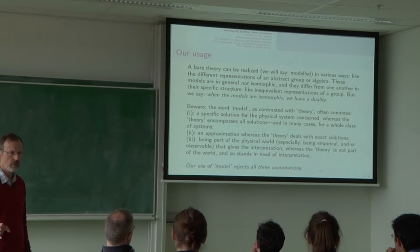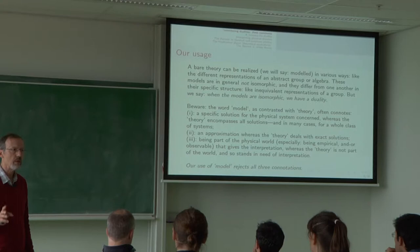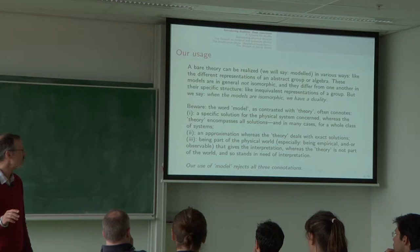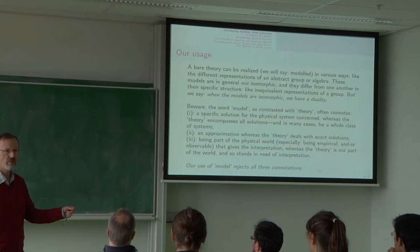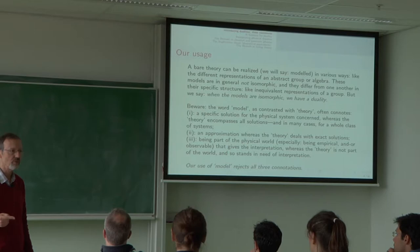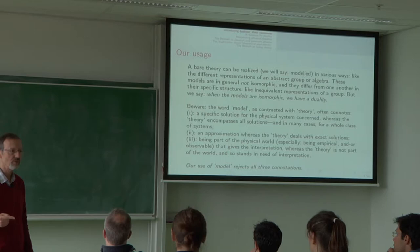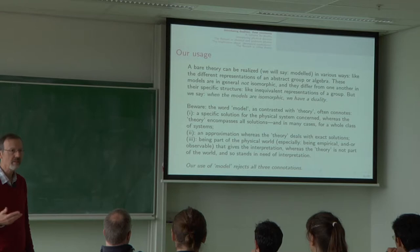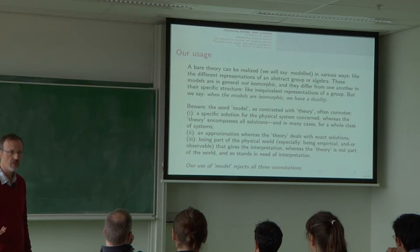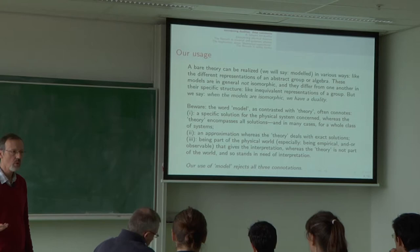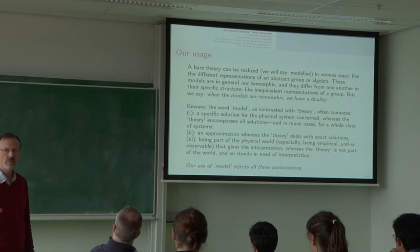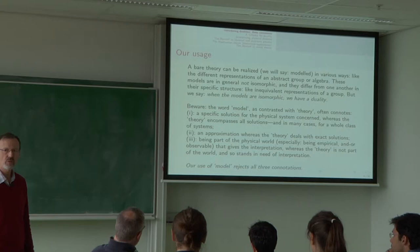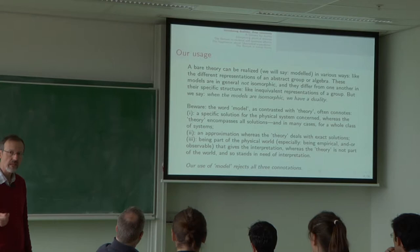So, this is the same idea again at the top. There's a bare theory. You can realize it or represent it in various ways. When these representations are models. When the models are isomorphic we say there's a duality. The first remark is this. Especially for logicians and philosophers here. But also for physicists. The word model has so many uses. But in particular, the word model contrasted with theory often has the connotation, while the theory is general, it's about all solutions. A model is a specific solution.